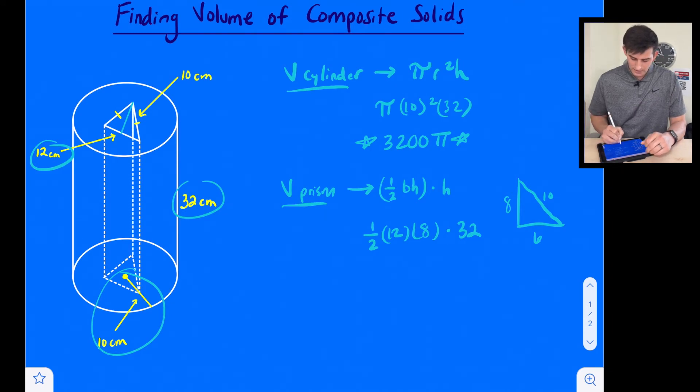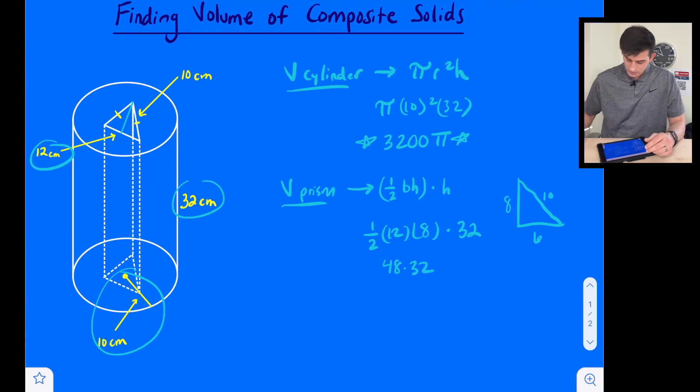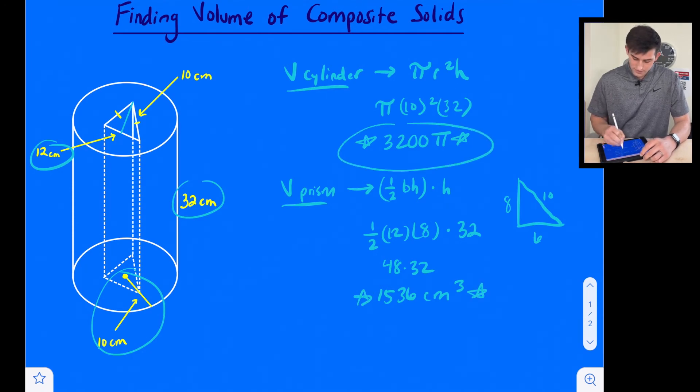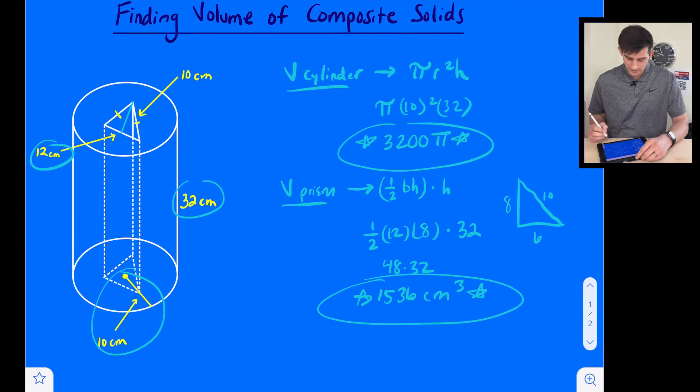Now we can solve this. So this is going to be 48 times 32. So we do 48 times 32, and that's going to give us 1536 for our volume. And this is cubic centimeters. So now we have our two volumes. We have 3200π and we have 1536, and now we need to subtract those.